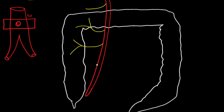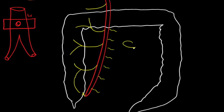Then comes the ileocolic artery, with a superior branch anastomosing with the right colic artery and an inferior branch anastomosing with the terminal superior mesenteric artery. On the left side there are 12 to 15 branches — the jejunal and ileal branches — which anastomose with each other and form vasa recta supplying the jejunal wall.